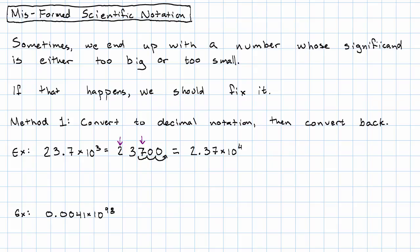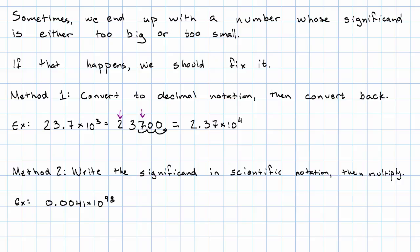Here's what we do. We're going to write just the significand in scientific notation and then we're going to multiply. Here's what I mean. So pulling out just the significand here, I have 0.0041.